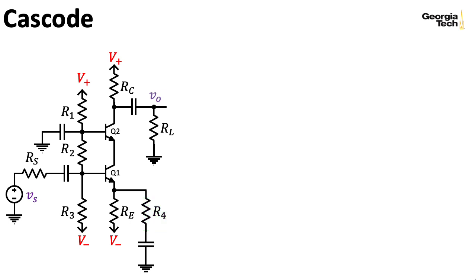We have our usual structure here in terms of analyzing it: RS here is considered to be the output impedance of the voltage source driving the amp, and not part of the amp itself. Similarly, I've placed an external load resistance RL here that the amplifier is driving. This is not considered part of the amplifier itself.